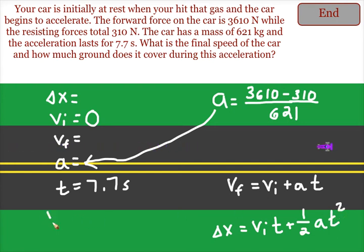Alternatively, if we know the initial and final speed, which we will after we solve for final speed, we can add them together and divide by two to get the average speed.